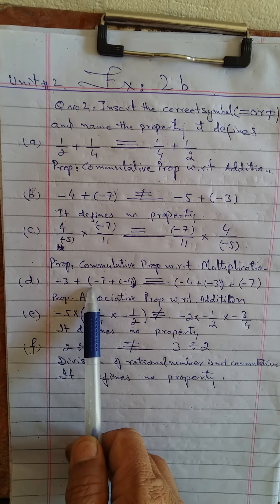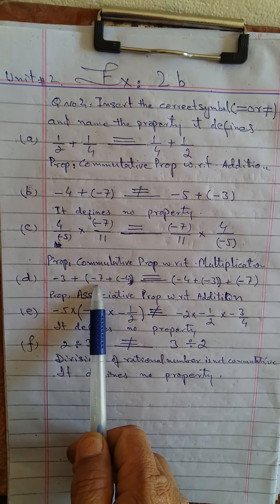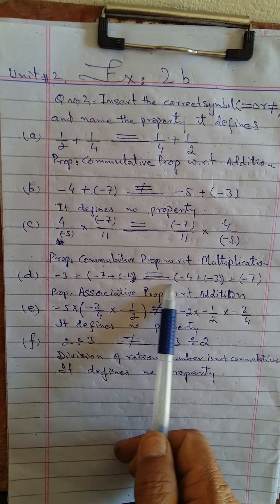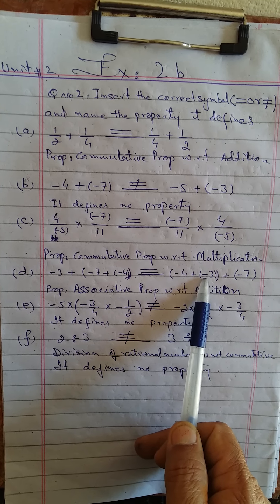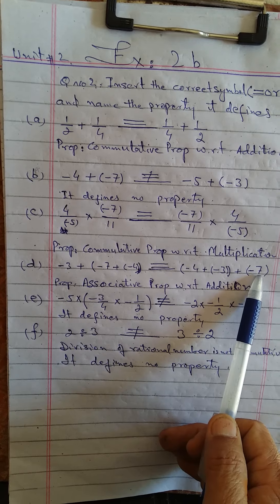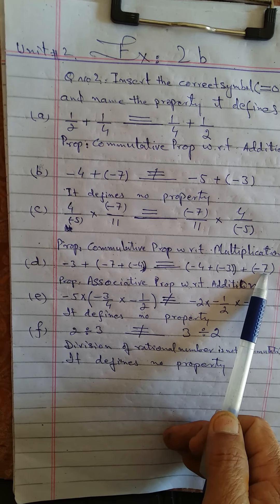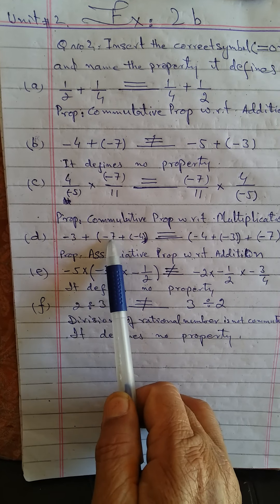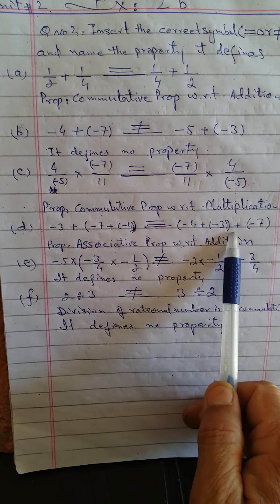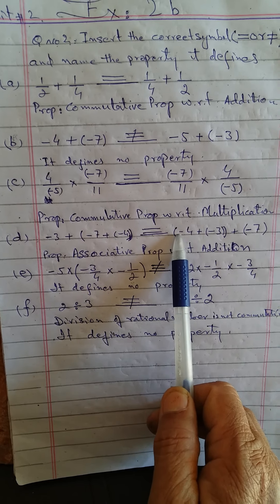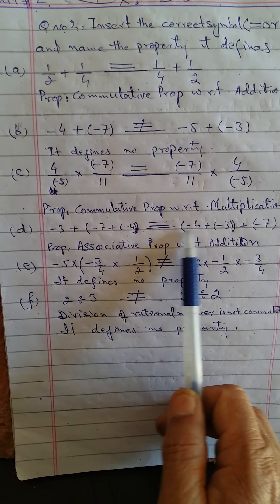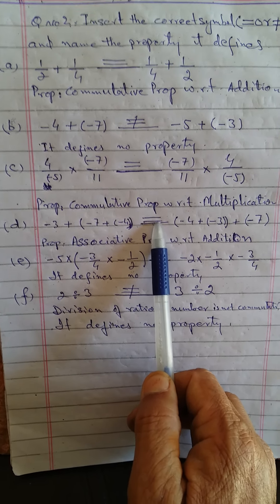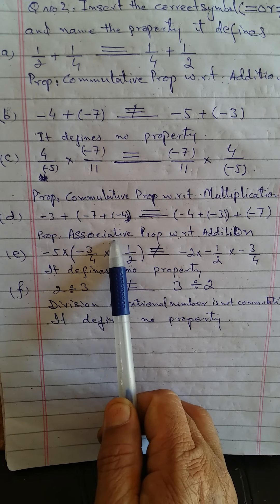Part number D: minus 3 plus into minus 7 plus minus 4, blank, minus 4 plus into minus 3 plus into minus 7. The positions have been changed — the second and third numbers were placed in a bracket together, and after the equal sign the first two numbers are placed in a bracket. The answer will be the same, so an equal sign will come here, and the property used is the associative property with respect to addition.